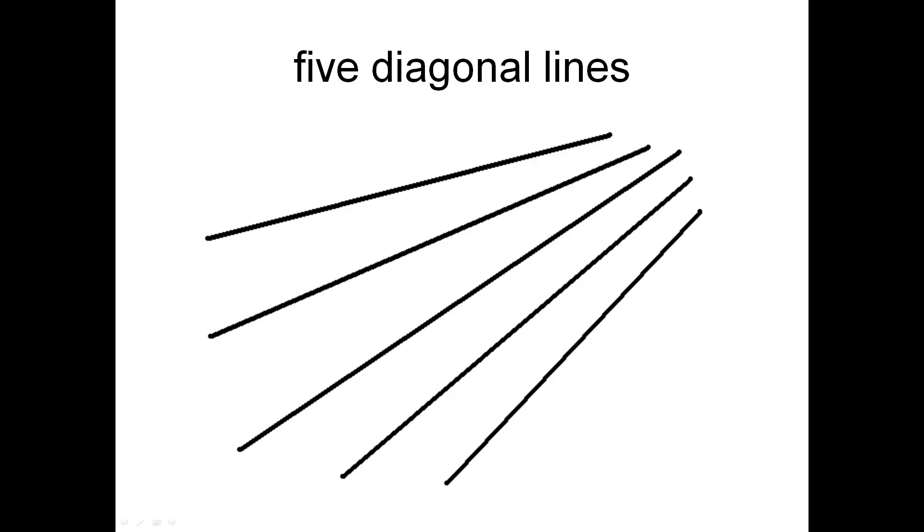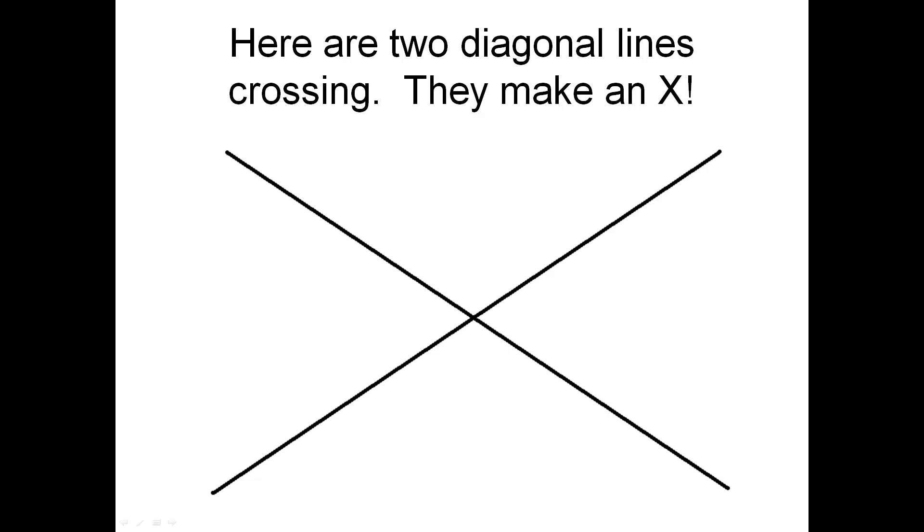Here are five diagonal lines. Here are two diagonal lines crossing. They make an X.